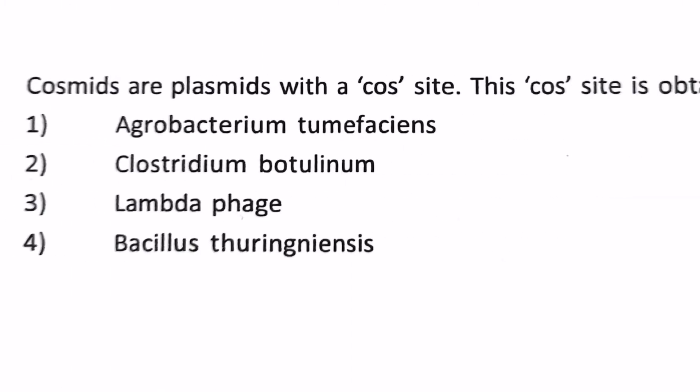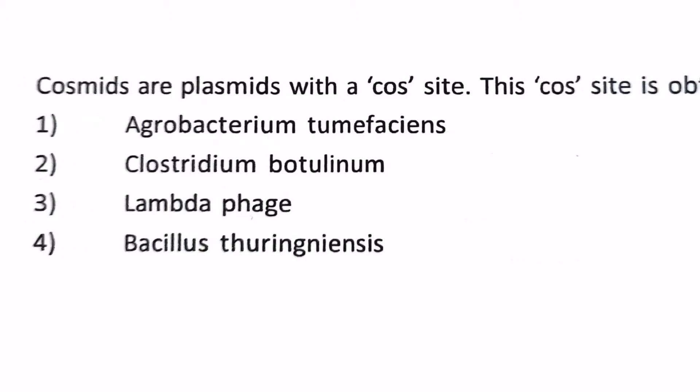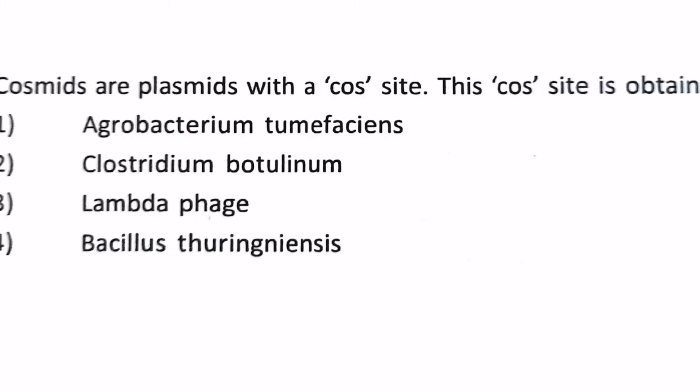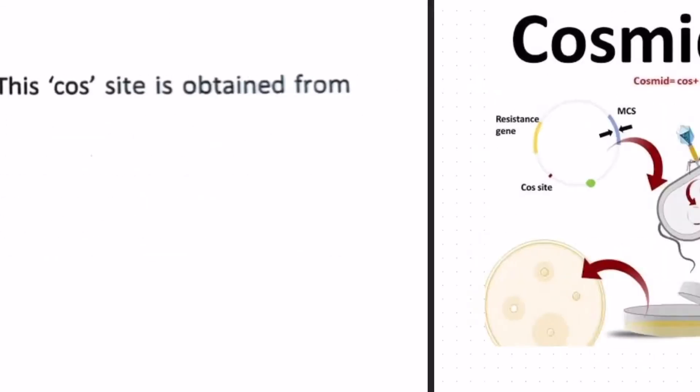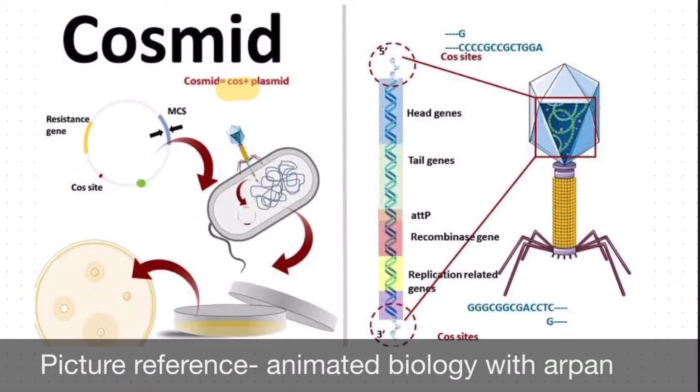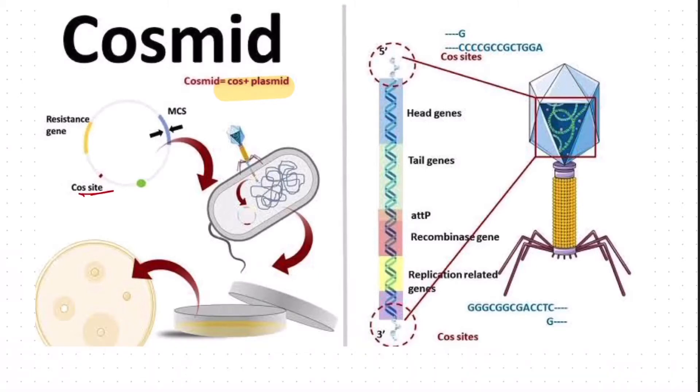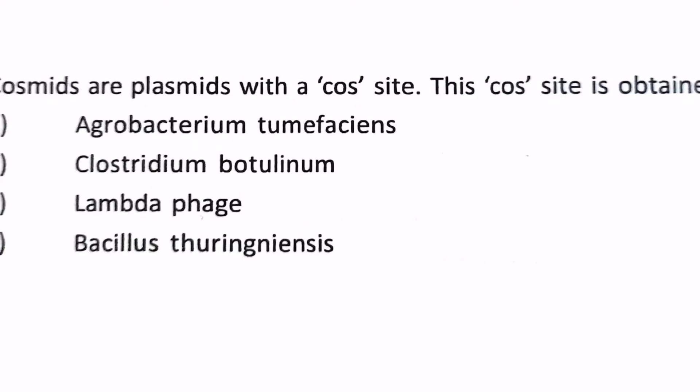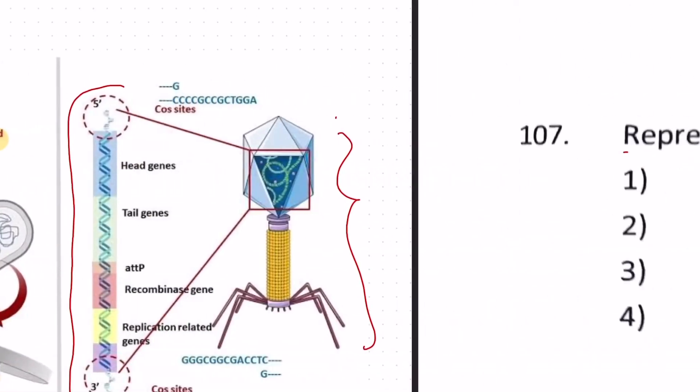Next question: cosmids are plasmids with a cos site. This cos site is obtained from option 1) Agrobacterium tumefaciens, 2) Clostridium botulinum, 3) lambda phage, 4) Bacillus thuringiensis. We'll have to know what are cosmids. We will just take a reference here. Cosmids are basically a cos site plus the plasmid together mixed up. What is this particular cos site which is present inside this plasmid? The cos site is a particular sequence of a virus which is present in our bacteriophage. Therefore cosmids will be obtained from lambda phage. Our answer will be 3.